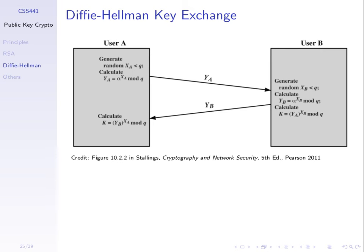The problem with symmetric key encryption is: how do I get the key from A to B? What we can do is use the Diffie-Hellman key exchange to exchange a secret key, and then use that secret key as the key for AES, a symmetric key algorithm. So we exchange secrets with Diffie-Hellman and then use that secret to encrypt our data.